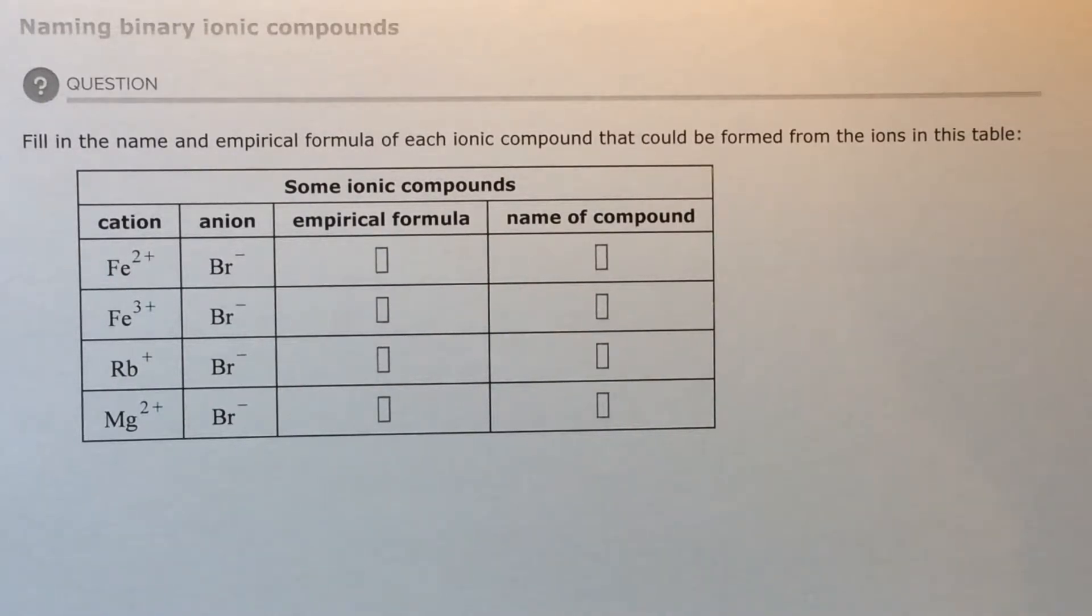The empirical formula is just a ratio. How many to how many? Is it a two to one ratio? Is it a two to three ratio? That's the empirical formula. Then you're going to need to name the compound, and how you name it really has to do with the cation.